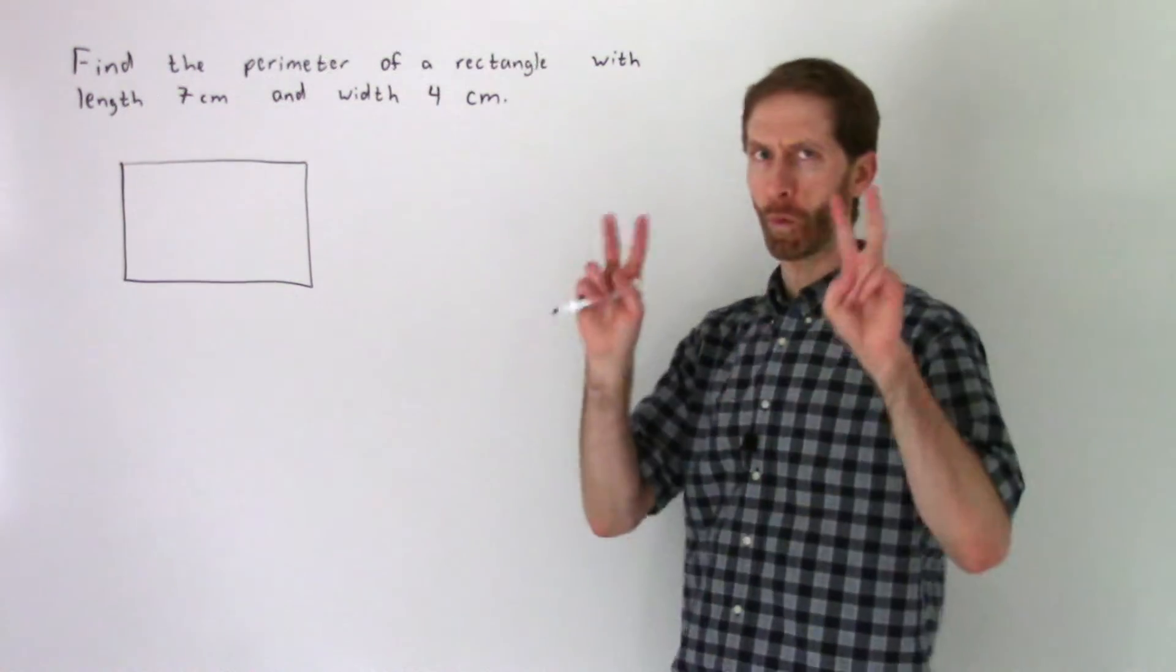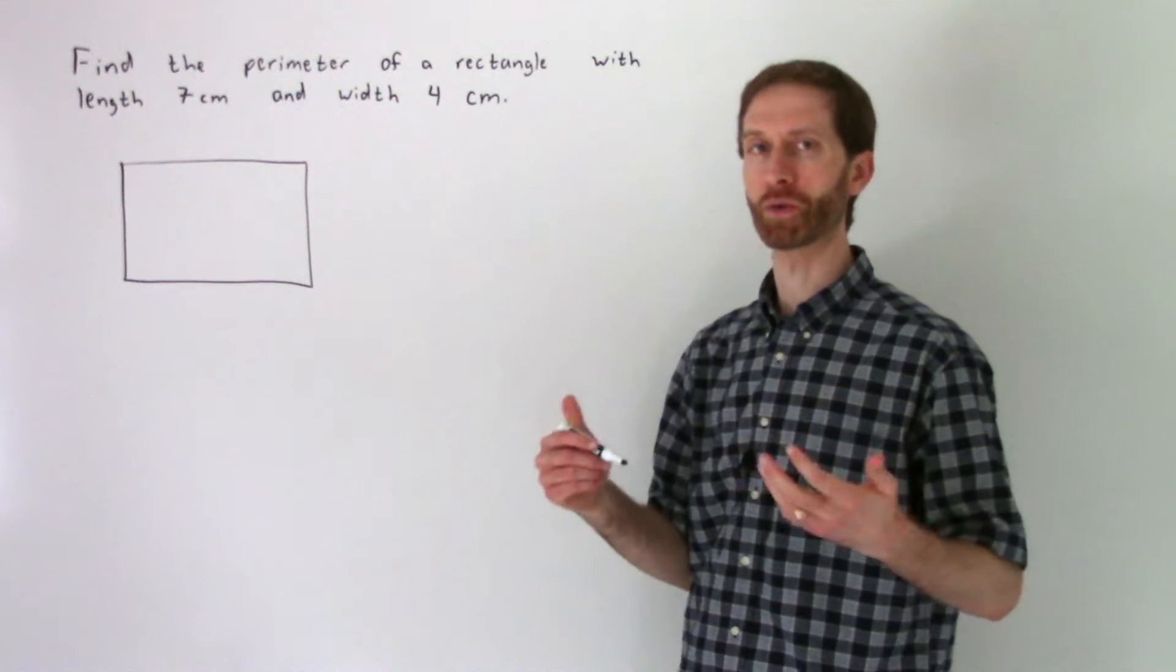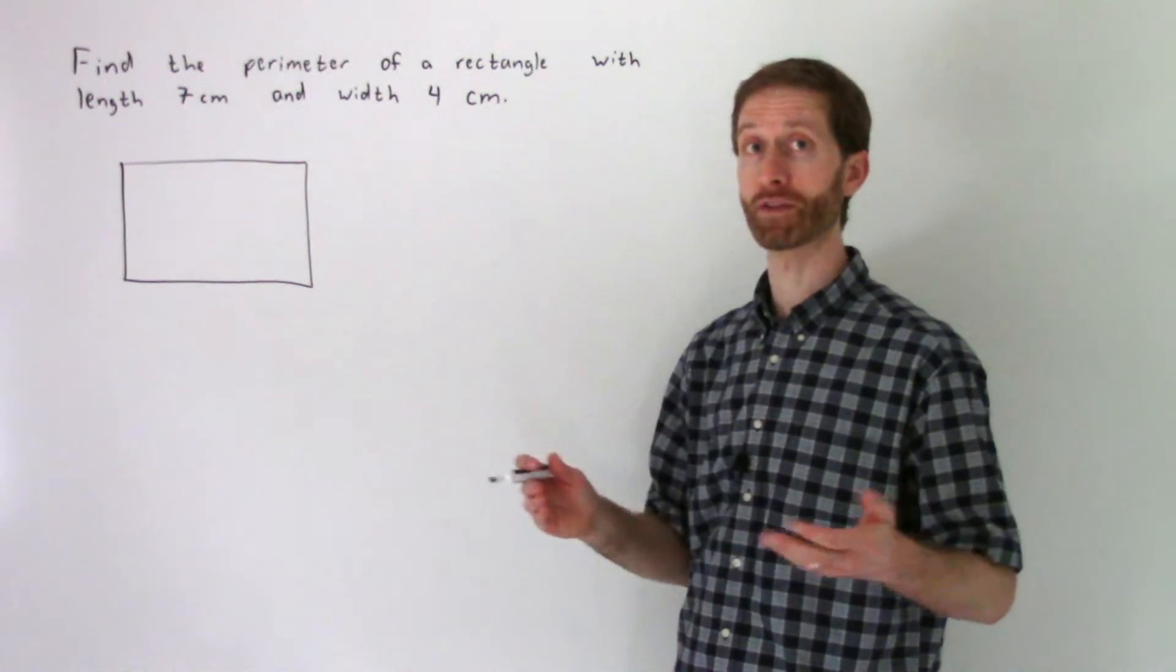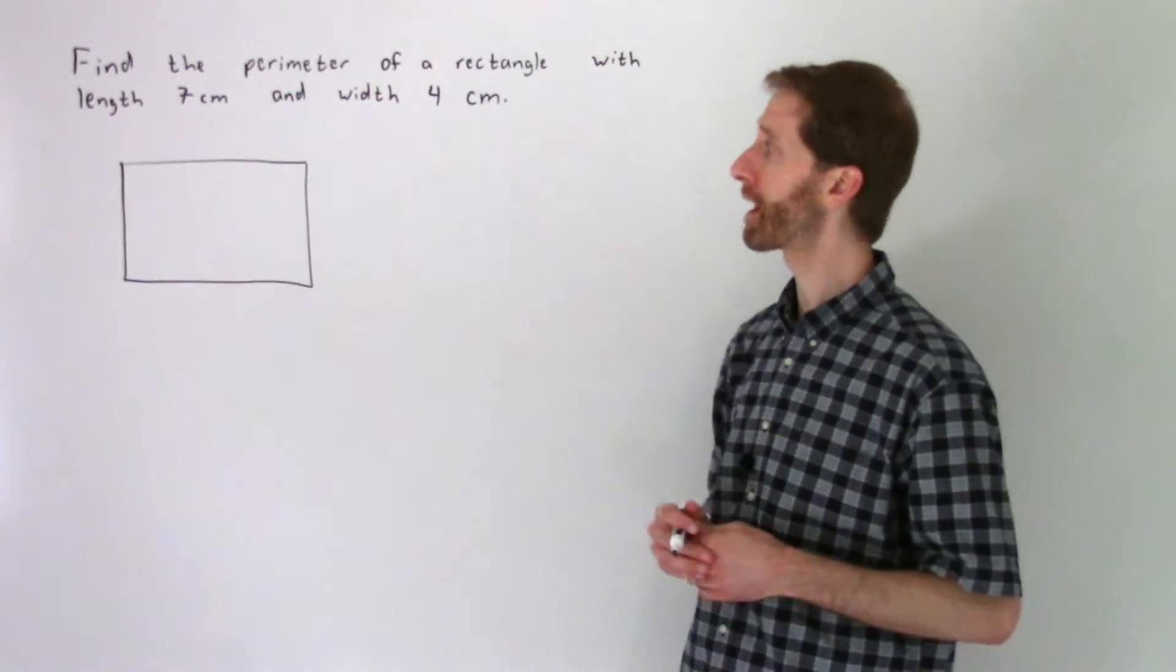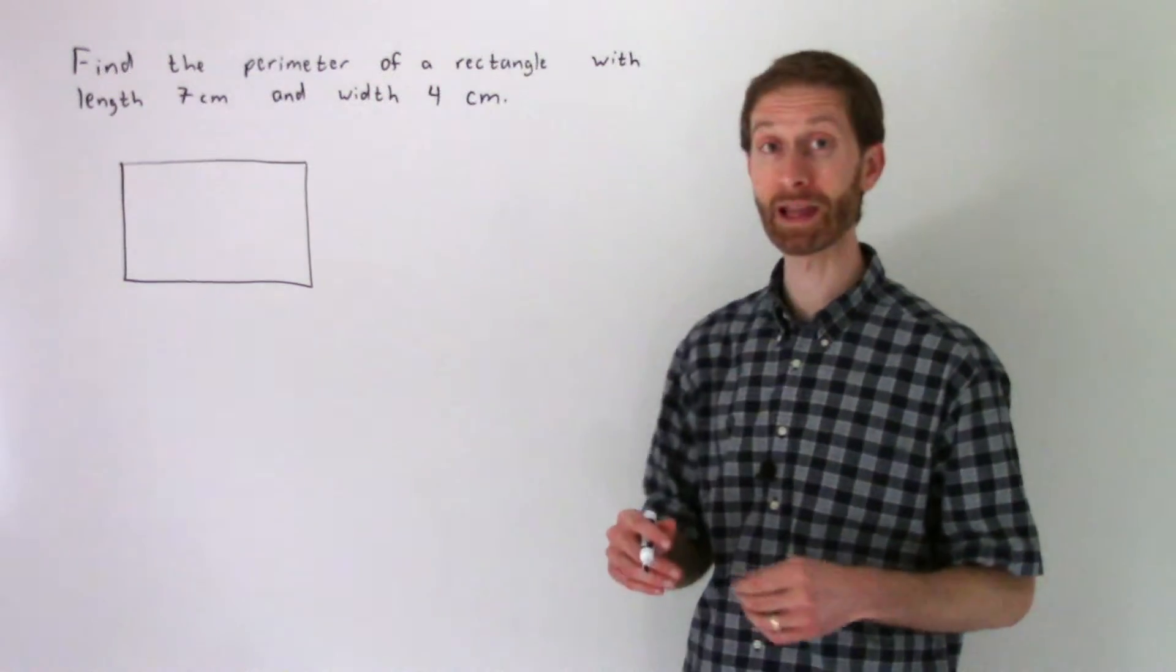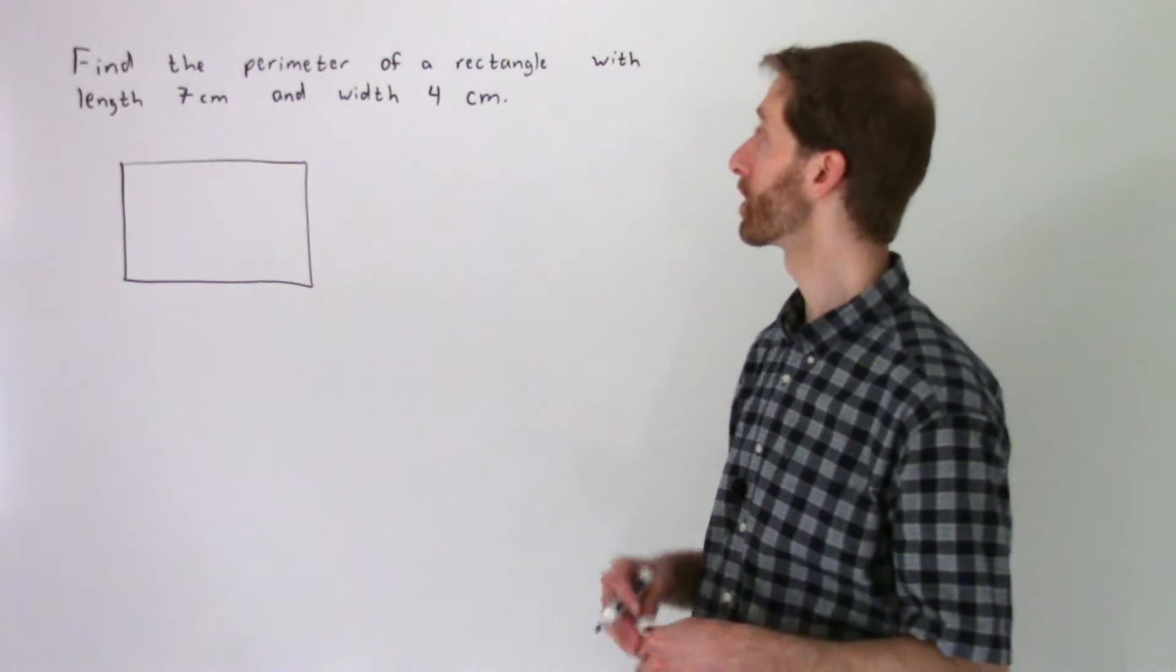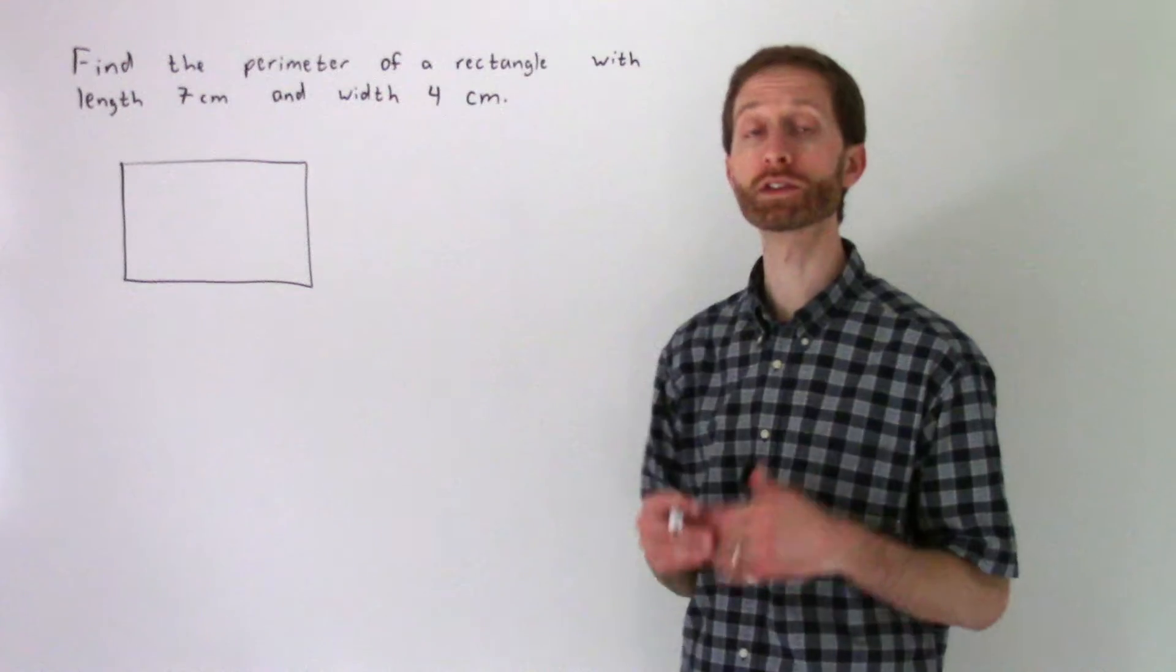So we've got this word problem. It's not really that much of a word problem, it's telling us all the pieces of information we need to know. It states, find the perimeter of a rectangle with length 7 cm and width 4 cm. So a couple of simple things to go over.